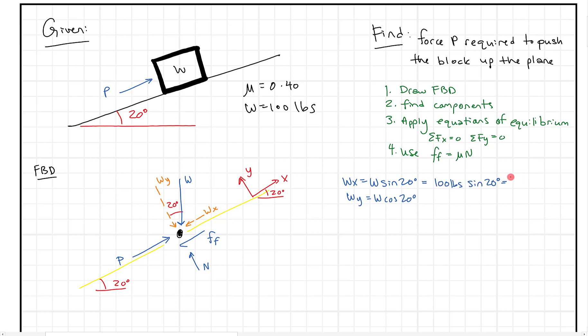When we solve for wx, we get 34.20 pounds. When we solve for wy, we get 93.97 pounds. That makes a little bit of sense because most of the force here is vertical since this is a pretty shallow angle.